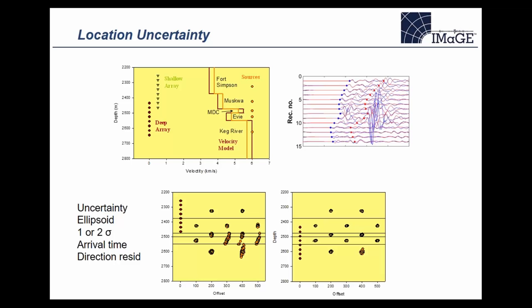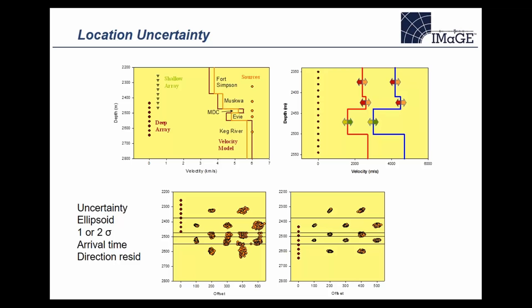Error ellipsoids are a common deliverable in microseismic, reporting the change in position with change in arrival time. There's another important aspect: how the location changes with the velocity model. A Monte Carlo approach perturbs the velocity model to see how locations change. This is an important aspect of microseismic accuracy that is unfortunately typically not reported, even though sensitivity studies of how locations change with velocity model are possible. If we have a well-calibrated velocity model, we reduce this second source of location uncertainty.